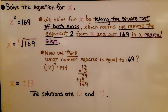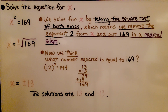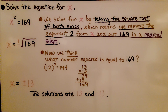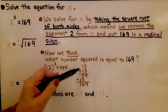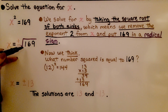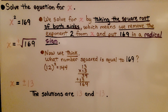Here we're solving the equation x squared equals 169. We solve for x by taking the square root of both sides, which removes the exponent 2 from x and places 169 under a radical sign. We think: what number squared equals 169? 10 squared is 100, 12 squared is 144. We try 13 times 13 — 13 squared — and we get 169. So x equals positive or negative 13, since negative 13 times negative 13 is positive 169. The solutions are positive 13 and negative 13.